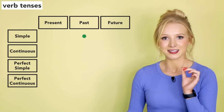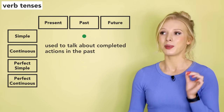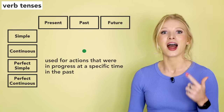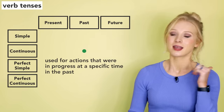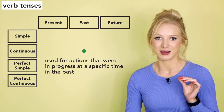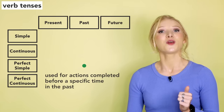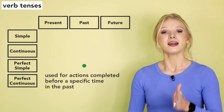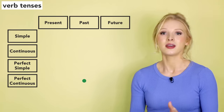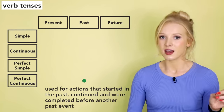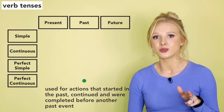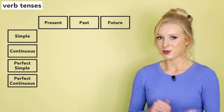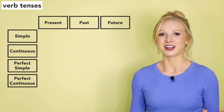Now the pasts. The past simple is used to talk about completed actions in the past. The past continuous is used for actions that were in progress at a specific time in the past. The past perfect is used for actions completed before a specific time in the past. And the past perfect continuous is used for actions that started in the past, continued and were completed before another past event. Don't worry, we'll look at some of these in more detail. And finally, the future.